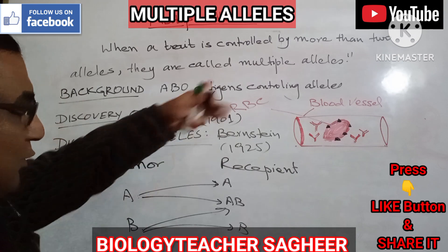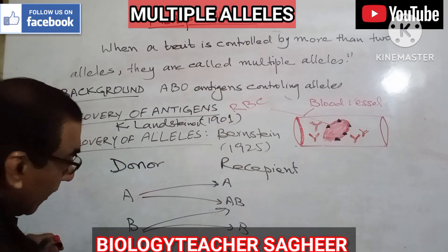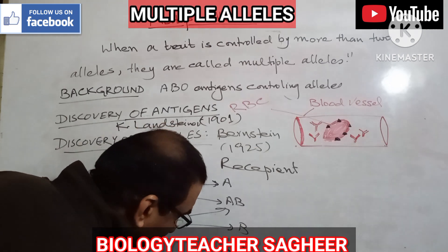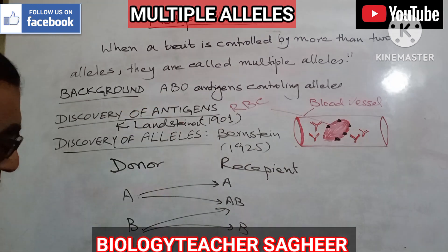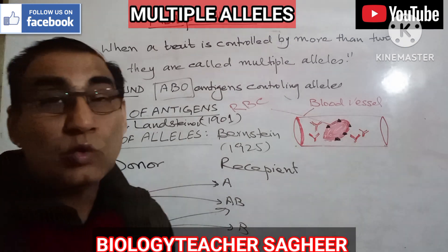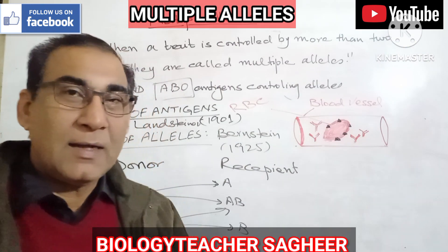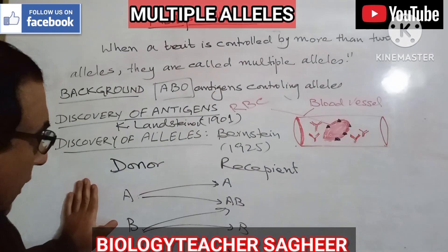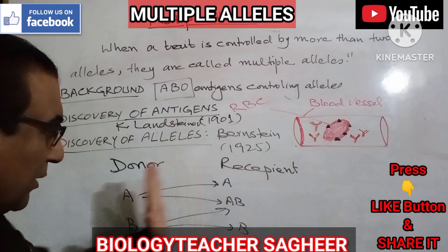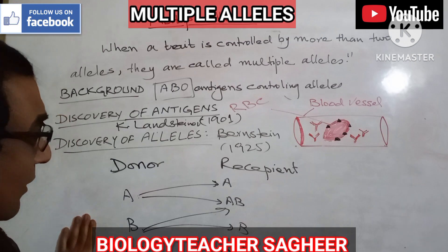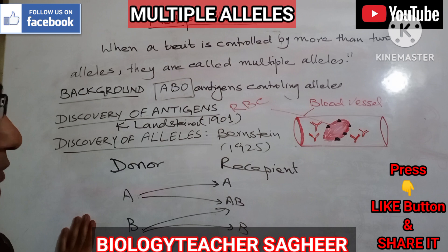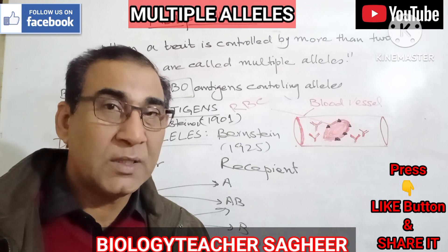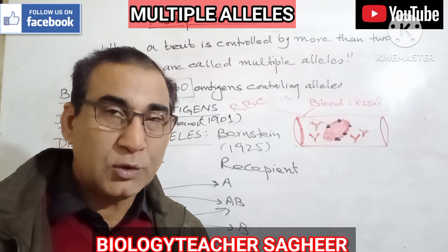If the donor is O, he can donate blood to O, to A, to B, and to AB. So in the ABO blood group system, O is known as the universal donor. The ABO blood group system is also used for determination of paternity of individuals, along with the MN blood group system and the RH system.